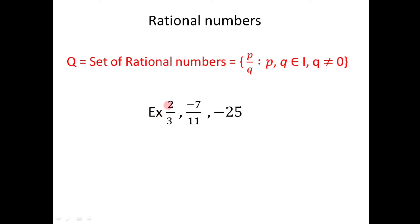We will have some examples. For example: 2 divided by 3, minus 7 divided by 11, and minus 25 — these are all rational numbers. The last number, minus 25, does not appear to have a denominator, but any number without a denominator is expressed as minus 25 divided by 1. So any integer can be expressed in the form p divided by q, which is why any integer is also a rational number.